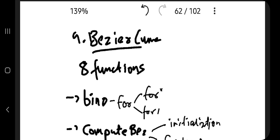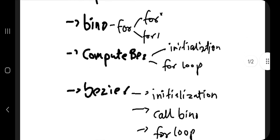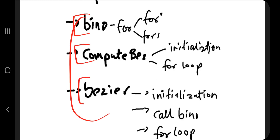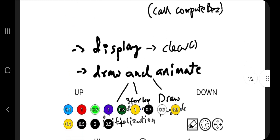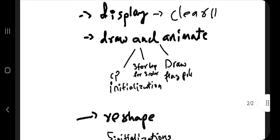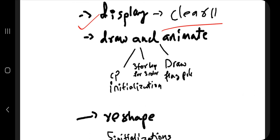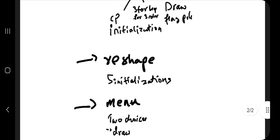Hello everyone, today in this video we'll be discussing the ninth lab program of CG, which is Bezier curve. There are totally eight functions, so let's go through what they are. The first one is bino, the second is compute bezier, and the third is bezier — these three are similar, we'll discuss that later, and those are the main functions. After that, the remaining five are display, which is very simple with just one line of code, draw and animate, which is also an important one.